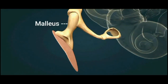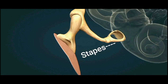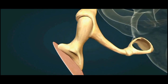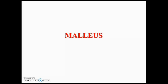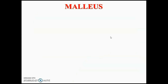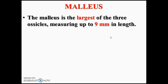When you isolate all 3 ossicles — malleus, incus, and stapes — you can see how the malleus is attached to the tympanic membrane laterally and stapes is related to the oval window of the internal ear. Coming to the malleus in detail, shown in green in the right middle ear diagram.